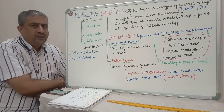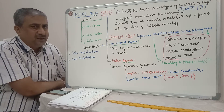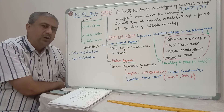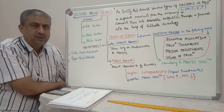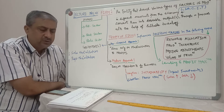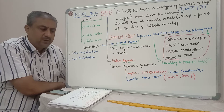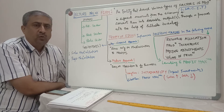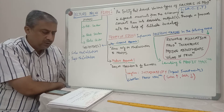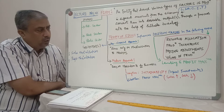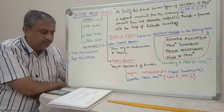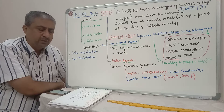Now, what are the types of firms? Private sector, joint sector, and public sector. Private sector is wholly owned by individuals or a group of individuals. There are two types: sole proprietorship, where there is a single owner, and partnership, where more than one person comes together with the sole objective of doing business. Joint sector is owned and managed jointly by individuals and governments, and includes private limited companies and public limited companies.